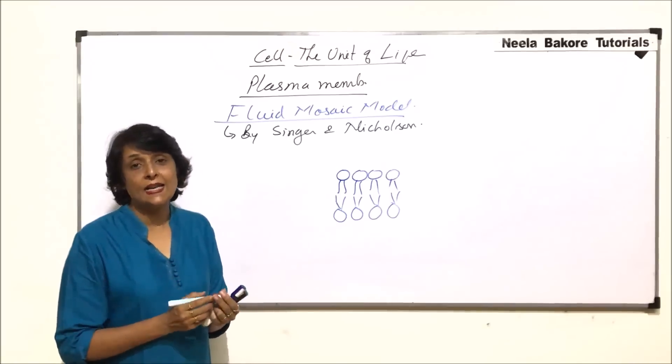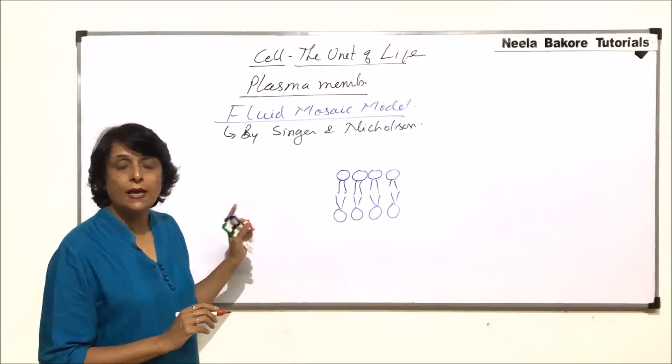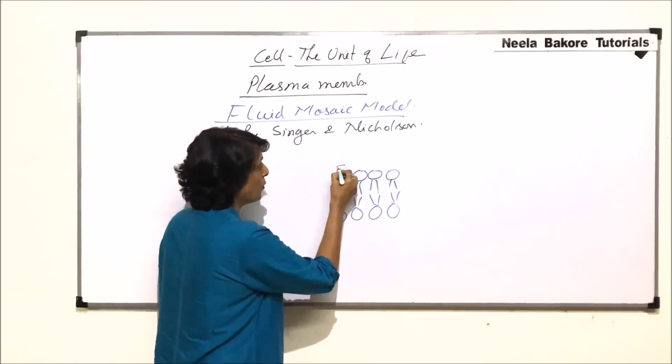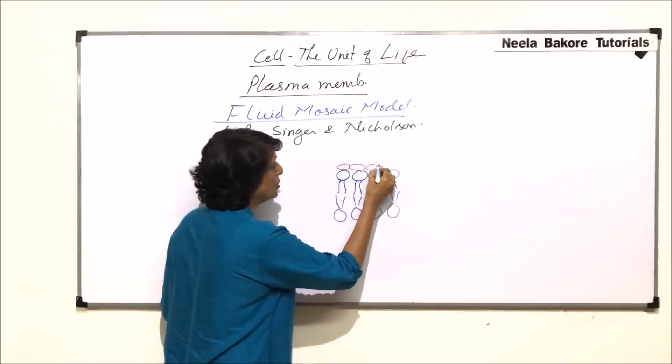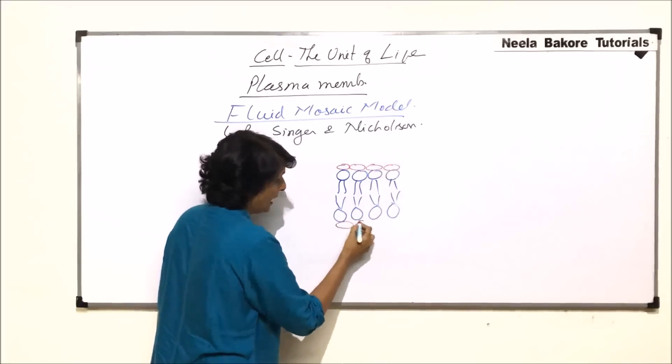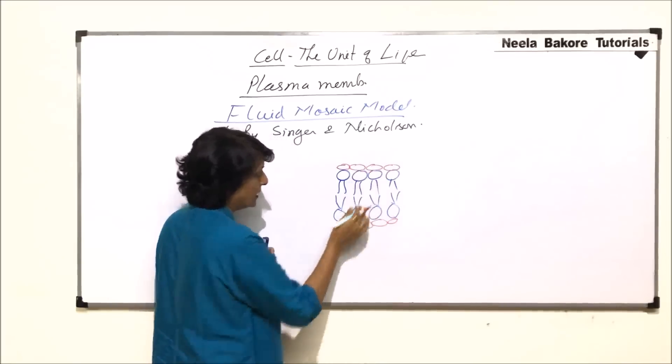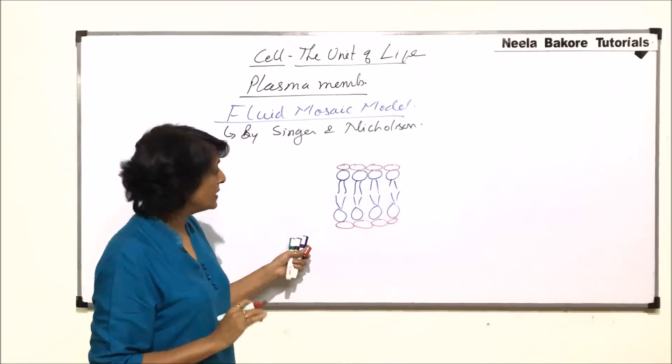Proteins are alpha globular and are of two types. The extrinsic proteins are attached to the head part. So these two layers they become extrinsic proteins.